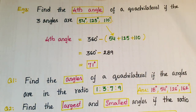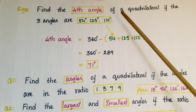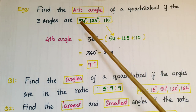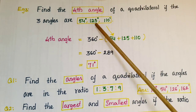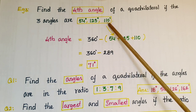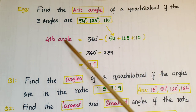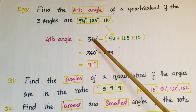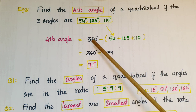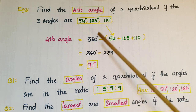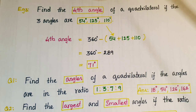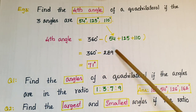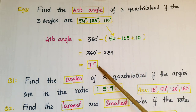Another example: find the fourth angle of a quadrilateral if the three known angles are 54 degrees, 125 degrees, and 110 degrees. The sum of angles of a quadrilateral is 360 degrees. Add the three angles: 54+125+110 = 289 degrees. So the fourth angle = 360 − 289 = 71 degrees.